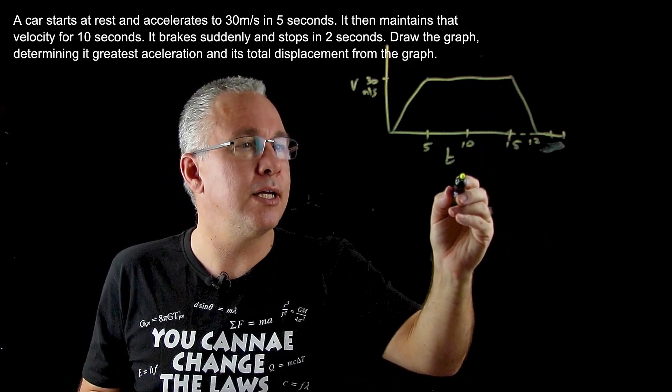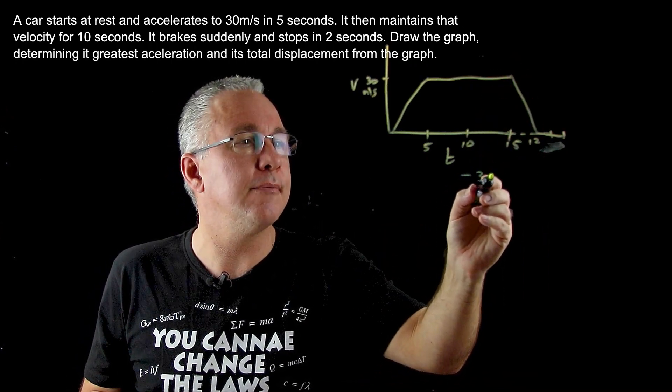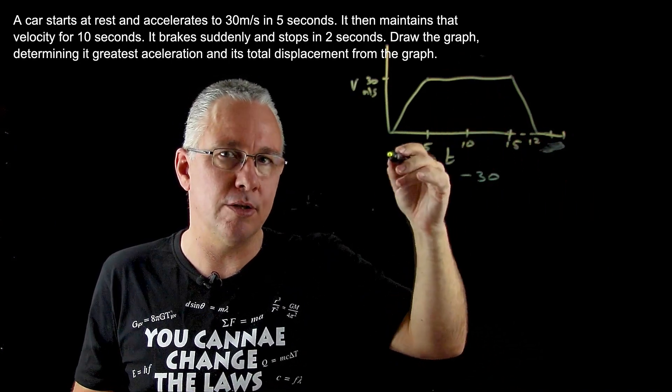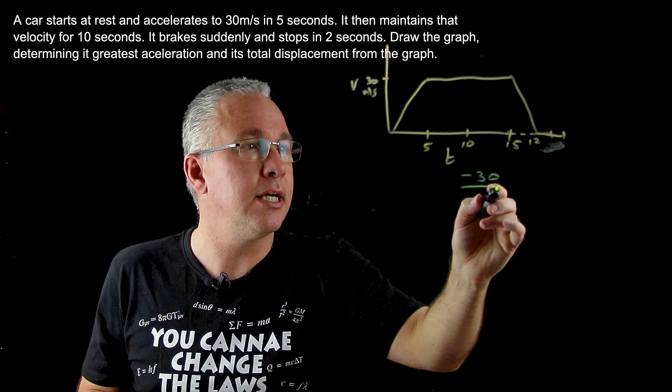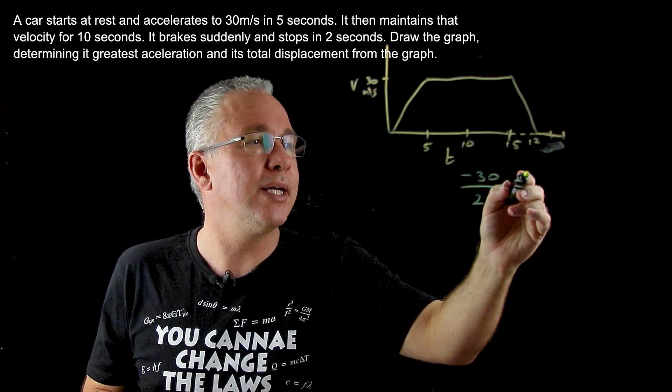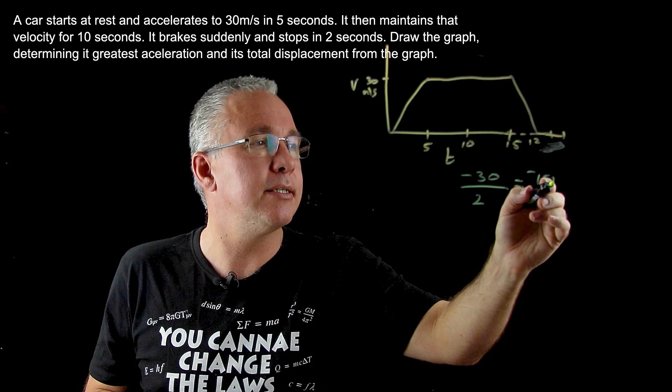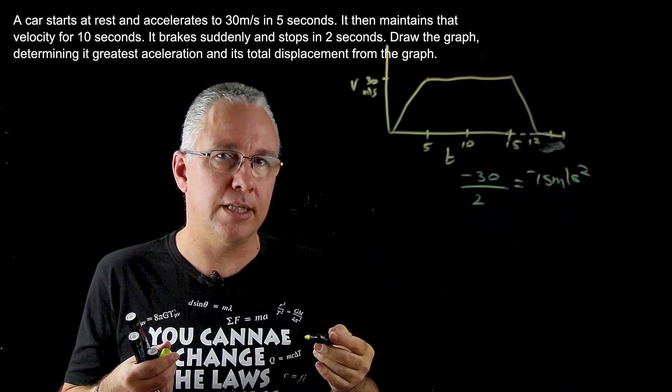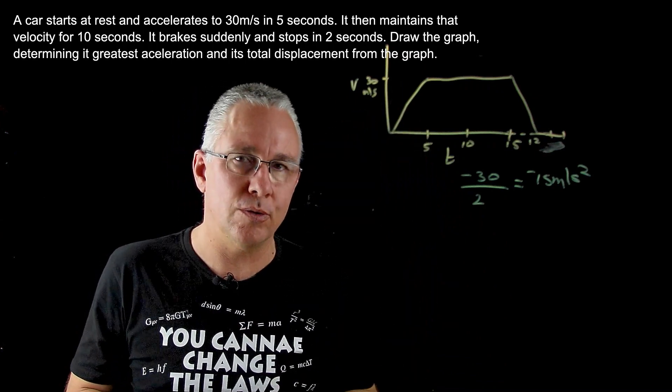The rise over the run is going to be negative 30. Why? Because we end up at 0, we started at 30, 0 minus 30 gives us negative 30, and the time frame there is 2. So we get negative 15 meters per second squared. That's the value for the acceleration.